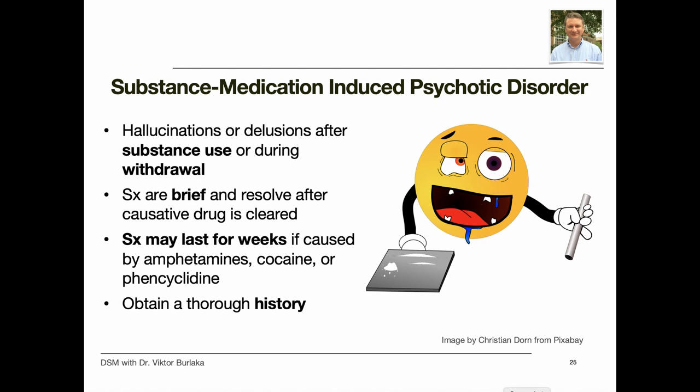Many substances can cause the disorder, including alcohol, amphetamines, cannabis, cocaine, hallucinogens, opioids, phencyclidine, sedatives, and hypnotics. To be considered substance-induced psychosis, the hallucinations and delusions should be in excess of those that typically accompany simple substance intoxication or withdrawal. Symptoms are often brief, resolving shortly after the causative drug is cleared — however, psychosis triggered by amphetamines, cocaine, or phencyclidine may persist for many weeks. Because some young people with prodromal or early-stage schizophrenia use substances that can induce psychosis, it is important to obtain a thorough history to seek evidence of prior mental symptoms before concluding that acute psychosis is due to substance use.